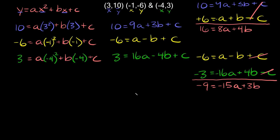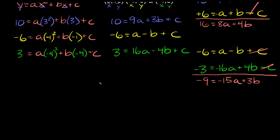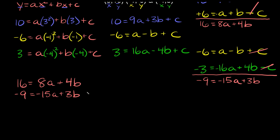Now we use our two new equations: 16 = 8a + 4b, and -9 = -15a + 3b. We have two equations with two unknowns, so we'll use elimination again. I'm going to eliminate b because it's a bit easier.